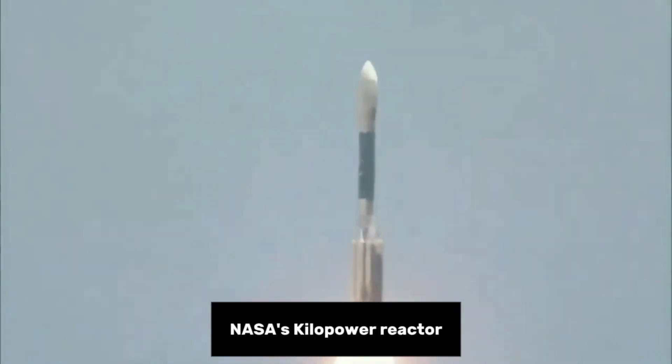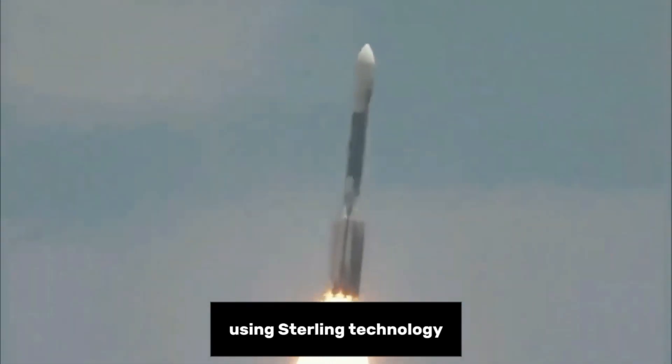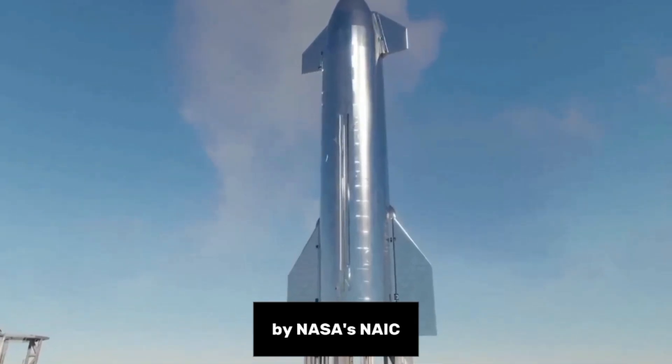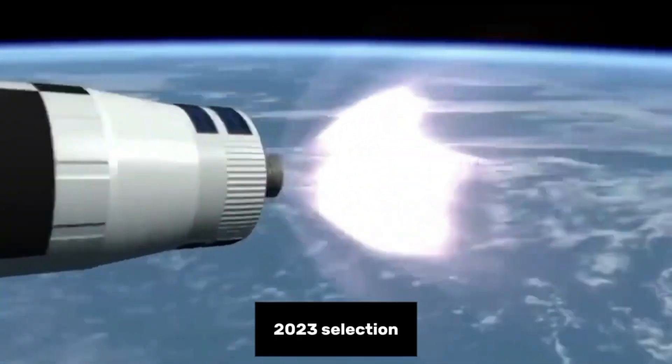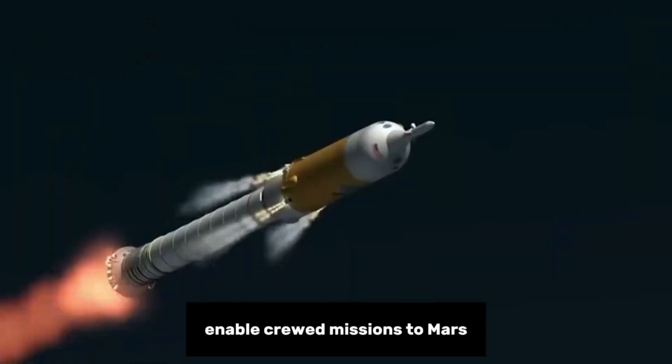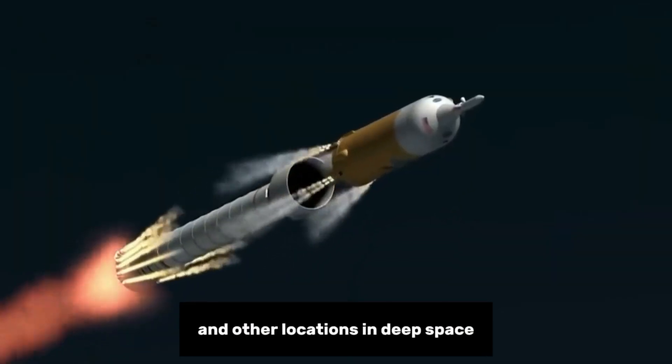Examples include NASA's Kilopower Reactor Using Stirling Technology (KRUSTY) and the hybrid fission-fusion reactor selected for Phase 1 development by NASA's NIAC 2023 selection. These and other nuclear applications could someday enable crewed missions to Mars and other locations in deep space, perhaps sooner than we think.